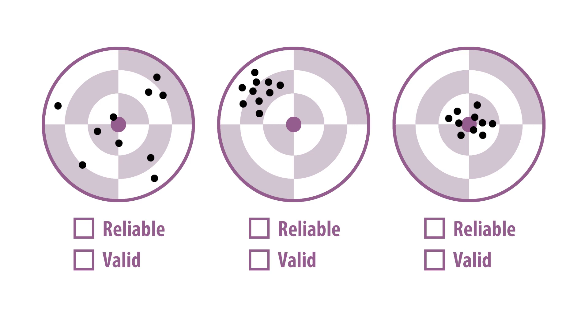The first target represents a measure that is not reliable because the results are scattered across the whole target. The results in the second target are clustered in a single area so this measure is reliable. The results do not need to hit the center of the target to be considered reliable. The third target represents a measure that has both validity and reliability because the results are clustered at the center of the target.